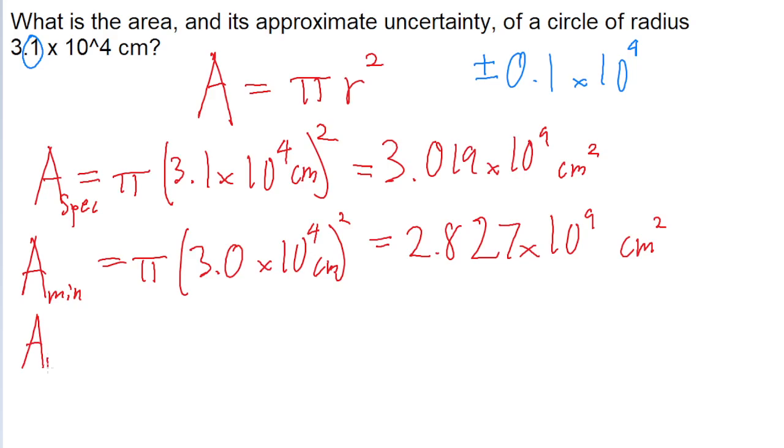And now we'll do the same thing for the max area, where we'll be adding 0.1. So instead it's 3.2 times 10 to the power of 4 squared centimeters. And this is 3.217 times 10 to the power of 9 squared centimeters.